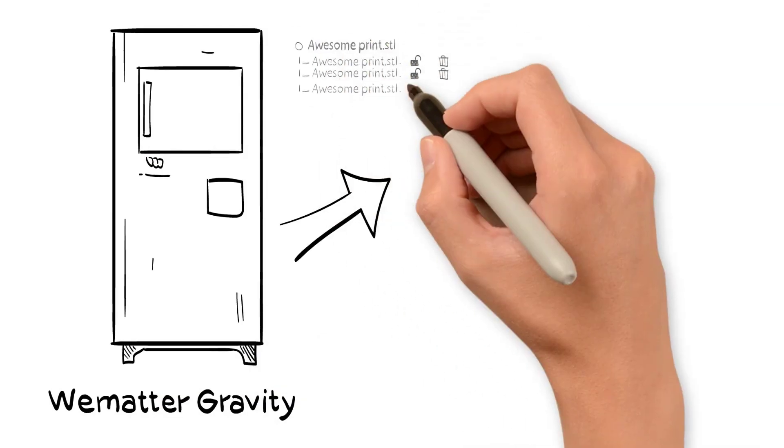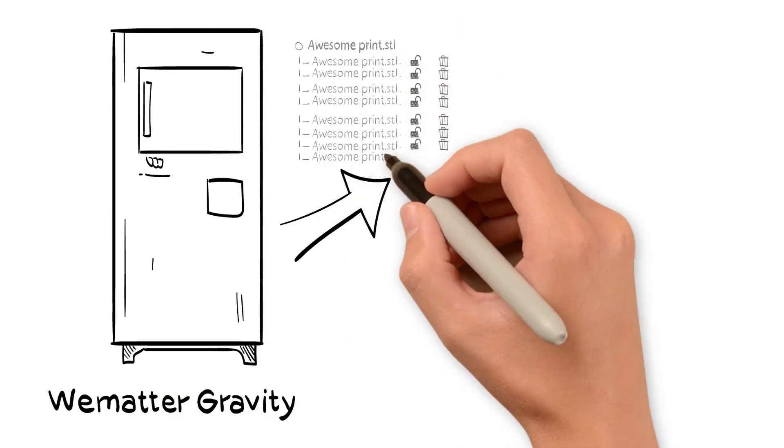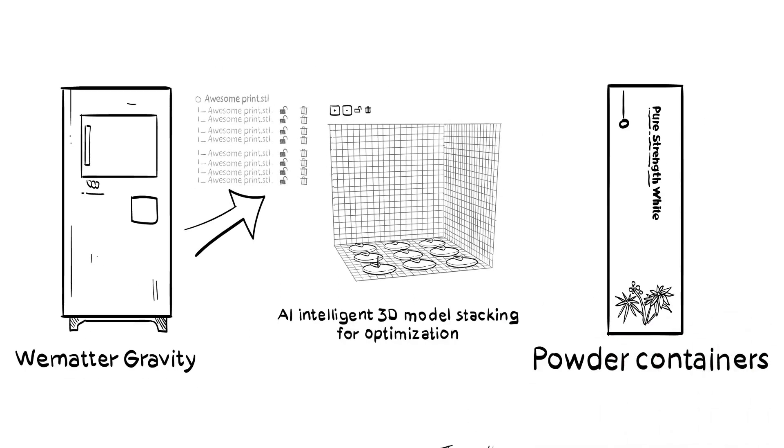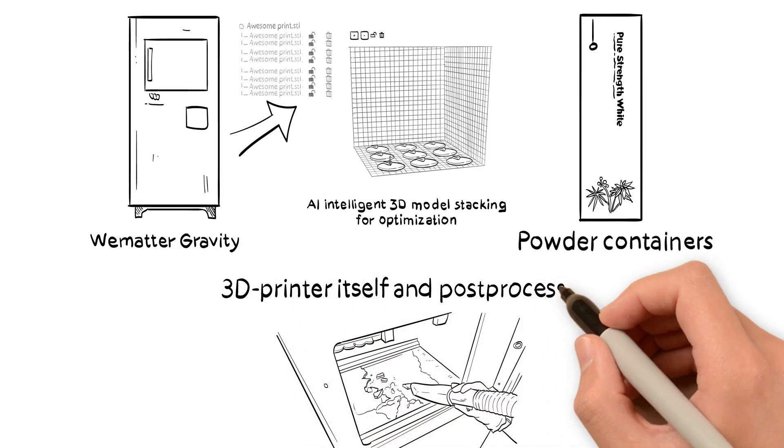Wematter Gravity is an SLS 3D printing ecosystem for additive manufacturing that consists of a cloud service, powder containers, the 3D printer itself, and post-processing.